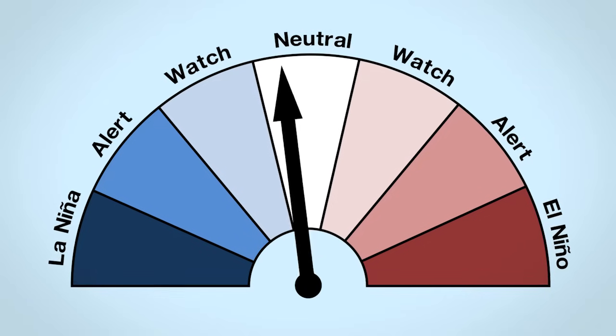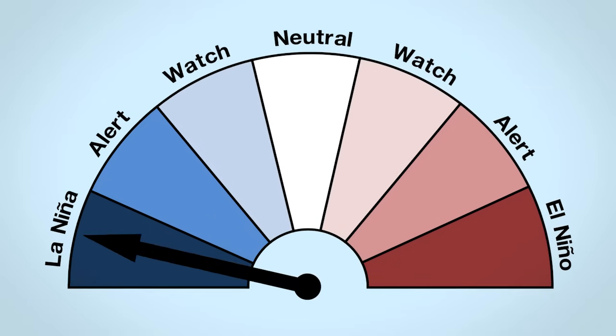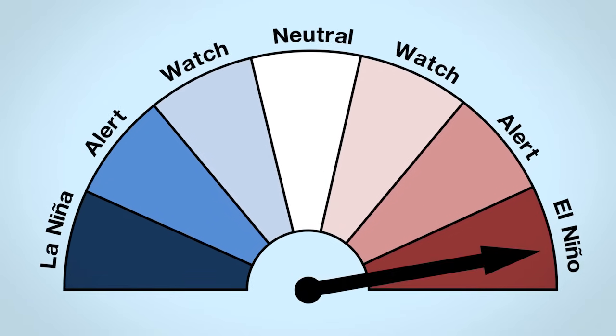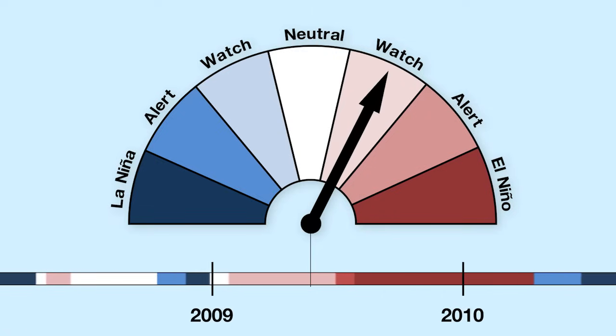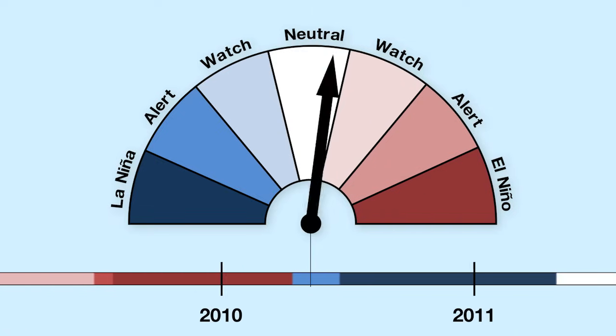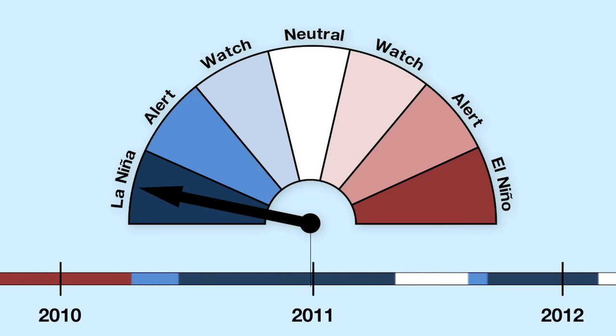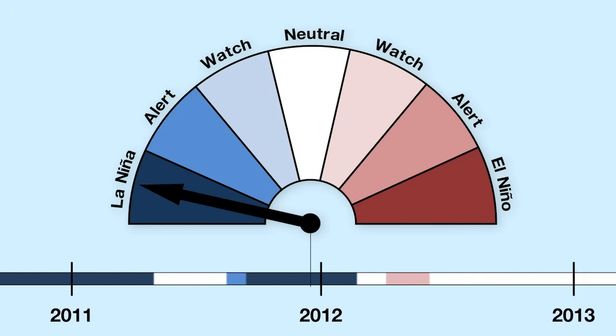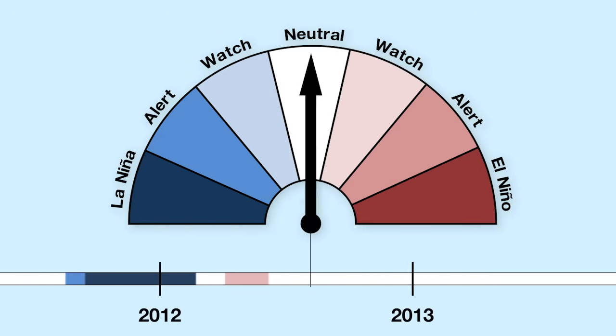ENSO naturally swings between three key phases: La Niña, Neutral, and El Niño. A typical ENSO phase starts in the first half of the year and lasts until the following autumn. Sometimes we can get the same phase for two or more years in a row. On average it takes about four years to swing from El Niño to La Niña and back again.